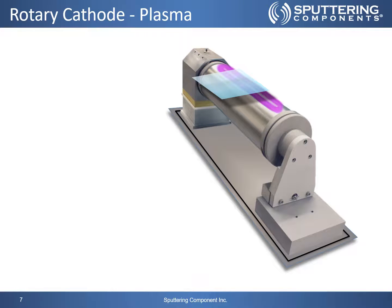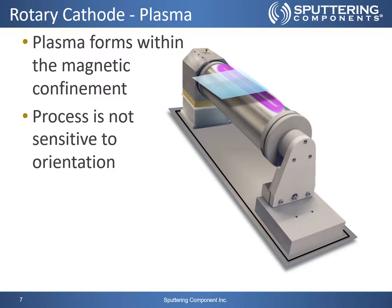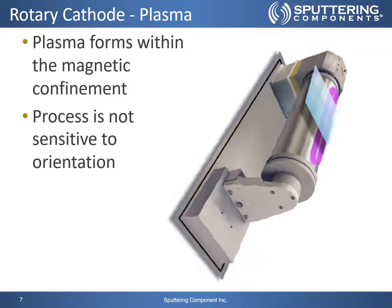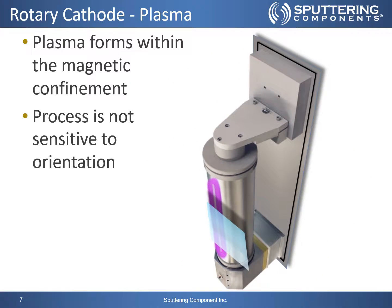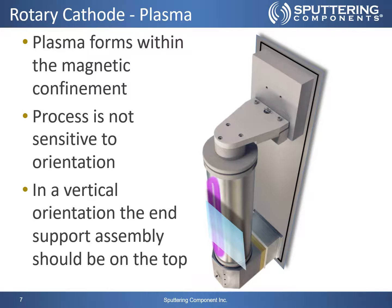Here is a picture of a rotary cathode with a simulated plasma on the target surface. The plasma on the surface of the target tube forms within the magnetic confinement produced by the magnet bar inside the target tube. The sputtering process is not sensitive to orientation and the target can be mounted in any direction. Horizontal and vertical target tube applications are the most common configurations. When mounting the target in a vertical orientation, the end support assembly should be on top of the target to make installation and removal of the target tube easier and to reduce wear of the magnet bar pushing in the end cap.